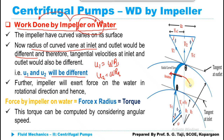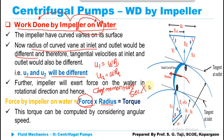When the impeller exerts force on the liquid, it is exerted in the rotational direction, in the form of torque. Torque is given by force multiplied by radius. This force can be calculated using the impulse-momentum principle, where force equals rate of change of momentum per second. Multiplying force by radius gives moment of momentum, which is called angular momentum.